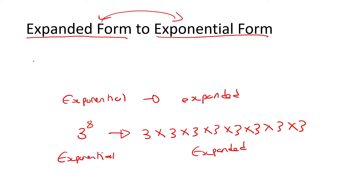For example, if you have 7 times 7 times 7 times 7, that will be the number 7, 4 times. So we're just doing it the opposite way around. The very important thing to understand is that there is a multiply sign in between — it's not a plus.